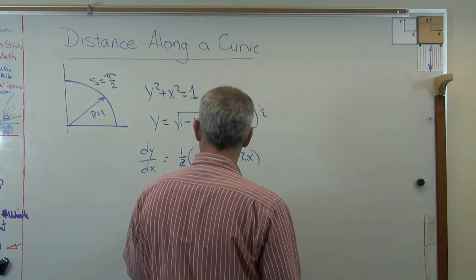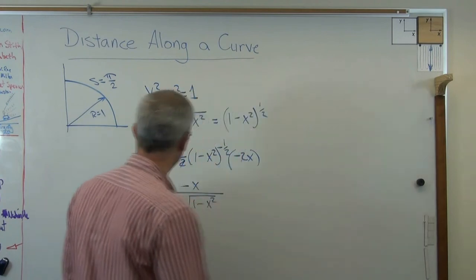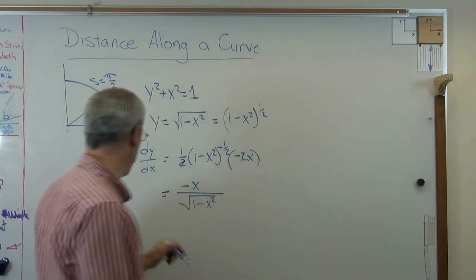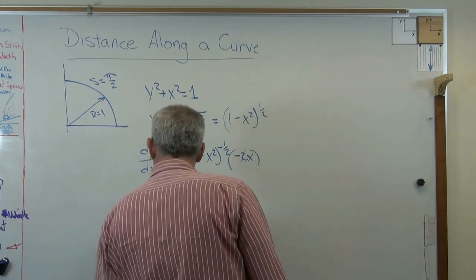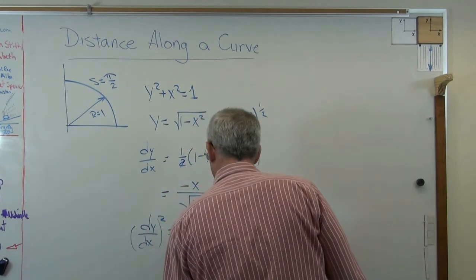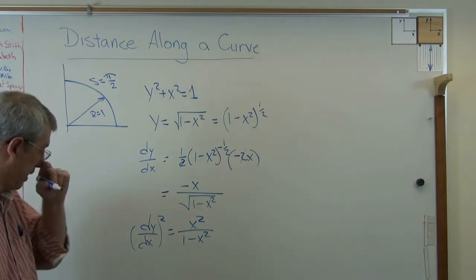1 half minus 2x. All right, so there's that. I've got to use the, let's see, the chain rule to get that real quick. And let's clean this up just a little bit. That 2 and that 2 cancel out. So I'm getting minus x over 1 minus x squared, the square root. So there's the derivative. What's the derivative squared? Make sure I stay in frame. Okay, dy over dx squared is x squared over 1 minus x squared. There we go.